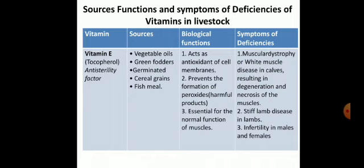Vitamin E, scientifically called tocopherol or anti-sterility factor, is mostly present in vegetable oils, green fodders, germinated cereal grains, and fish meal. Its biological function is to act as an antioxidant of cell membranes and prevent the formation of harmful peroxide products, and it is essential for normal function of muscles. Deficiency symptoms include muscular dystrophy, weakness of muscles or white muscle disease in calves, resulting in degeneration and necrosis of muscles, stiff lamb disease in lambs, and infertility in both males and females.